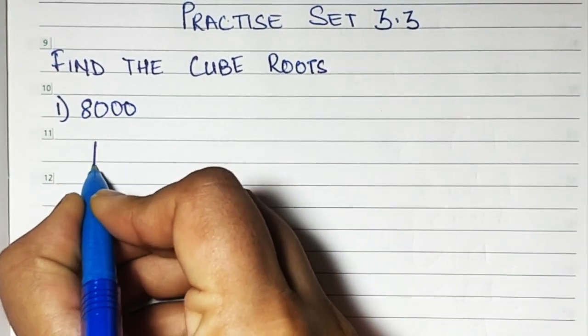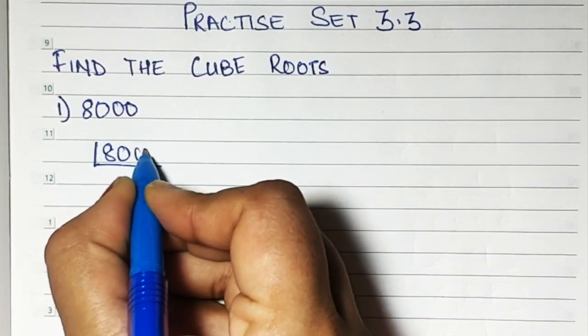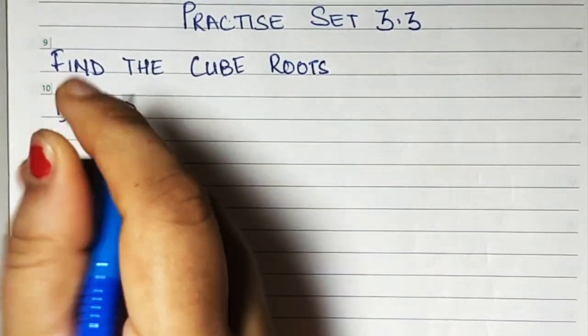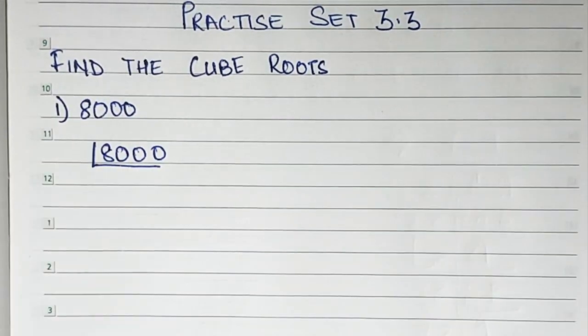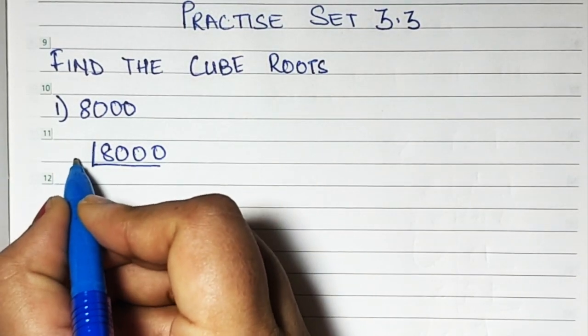So now let's begin with 8000. We will have to find the factors of 8000 through the prime factor method.